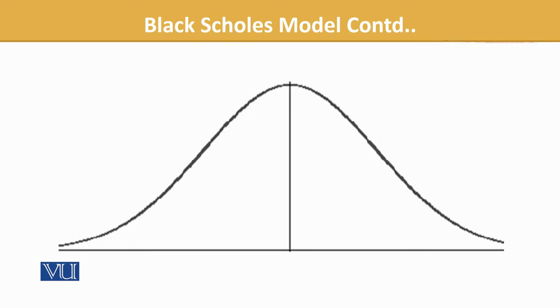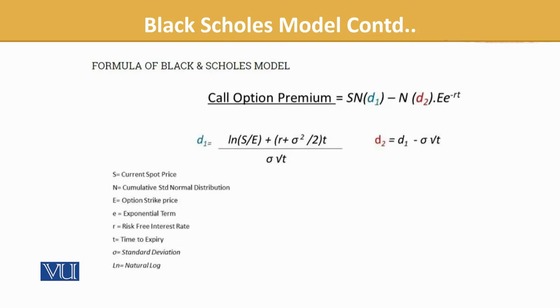You can see the Black-Scholes formula. This is the formula, but this is not required to memorize. What are the elements captured and discussed in it?